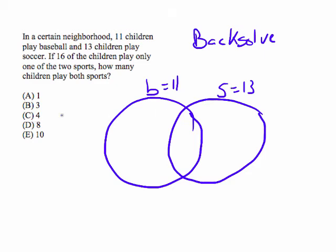How many play both sports if 16 of them play only one sport? Well, when we back-solve, we start with C, and we see what happens. C says that four people play both. Well, if four people play both, then the rest of the 11 baseball players is seven, and the rest of the 13 soccer players is nine. So does this work with what the question says? It says 16 of the children play only one of the two sports. How many play both? Well, nine and seven is indeed 16. So that worked. Four is the answer. Seven plus nine is 16. Sixteen children play only one sport. Four children play both. Back-solve. Super easy. Very convenient.